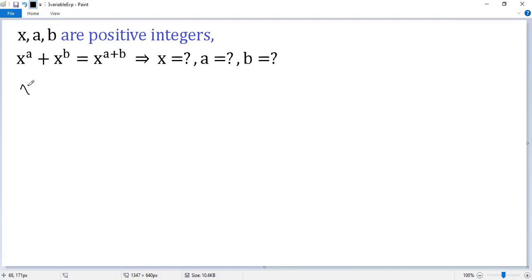The left side is x to the power of a plus x to the power of b. The right side can be written as x to the power of a times x to the power of b. To make the equation look simpler, let's do substitution. So let p equals x to the power of a, q equals x to the power of b.